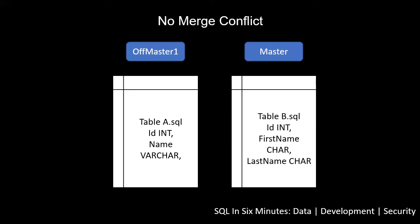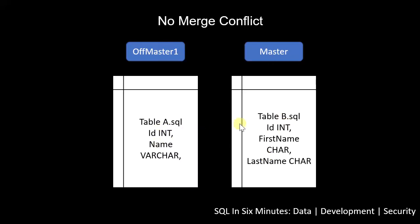First of all, let's look at what's not going to generate a merge conflict. Suppose we have the master branch and we create a branch off of master — we'll call it 'off master one.' We edit table A (the table A.sql file) and add a name varchar character. On the master branch, we edit table B (table B.sql file) and add a first name and a last name character. Now, if we were to do a merge from off master to master, there would be no issue, because these are different files — table A.sql and table B.sql. So there's not going to be a conflict, and we would be able to merge off master into master without an issue.